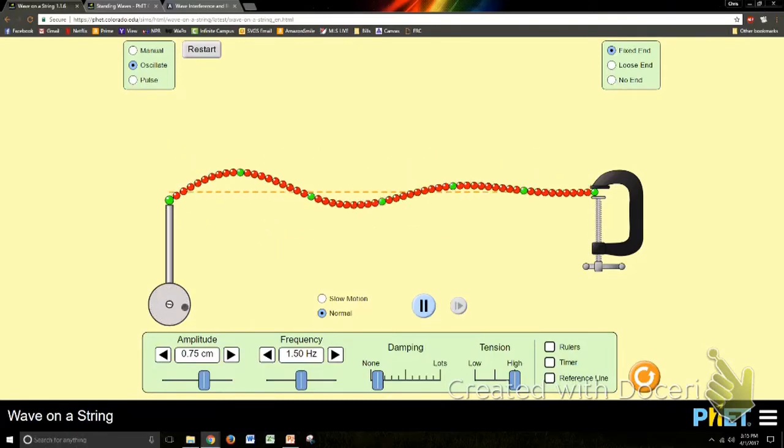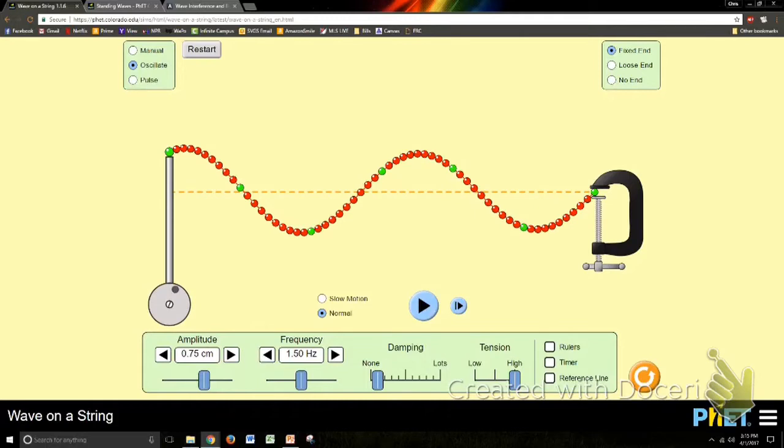So if I pause it at the right time, then I should be able to pick out what are called nodes and antinodes, a place where there is no movement of the particles, meaning there's always destructive interference there at all times. We're always getting a crest meeting a trough. That's where I get a node, and that includes any fixed end that might be there.